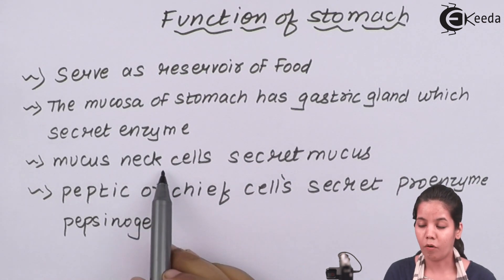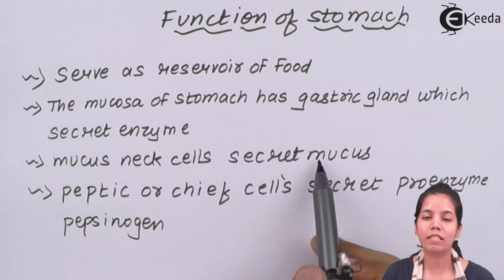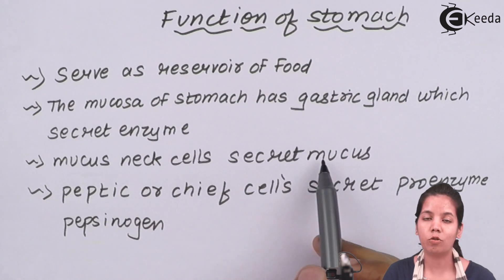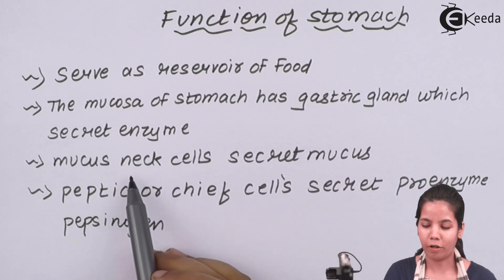That is, mucosal neck cells of gastric gland secrete mucus and this reduces the acidity in the stomach. Remember, there is HCL present in stomach. So just to reduce that acidity, mucus cells are important.